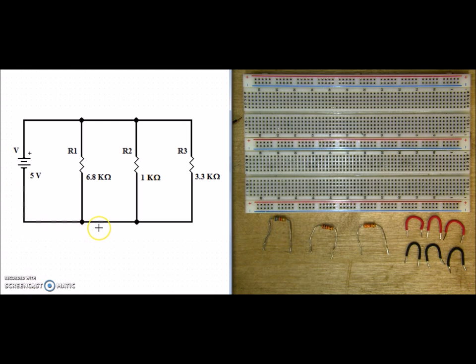Since current had multiple paths to flow through, that's an indication of parallel. Again, parallel is two or more paths for current to flow.